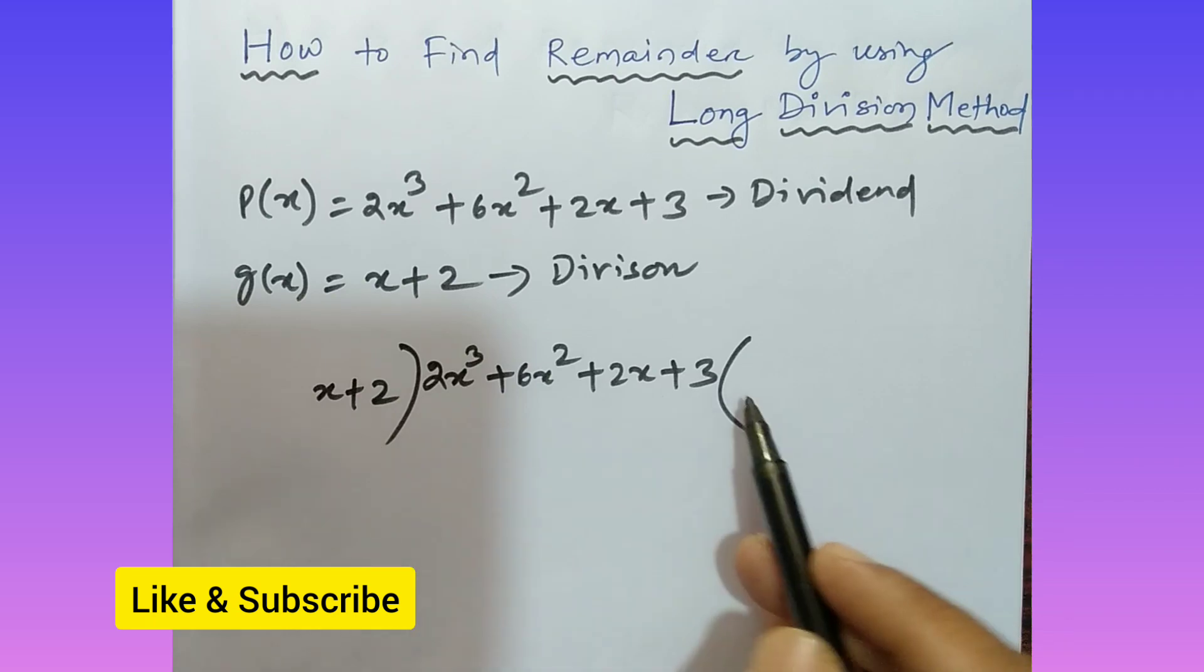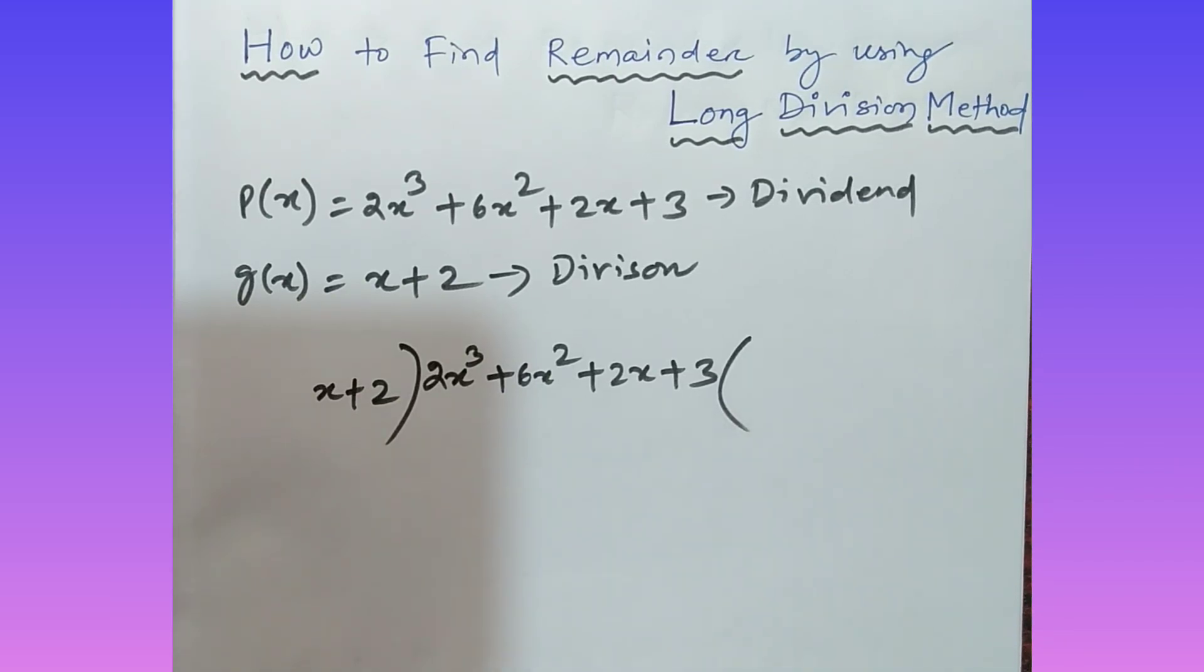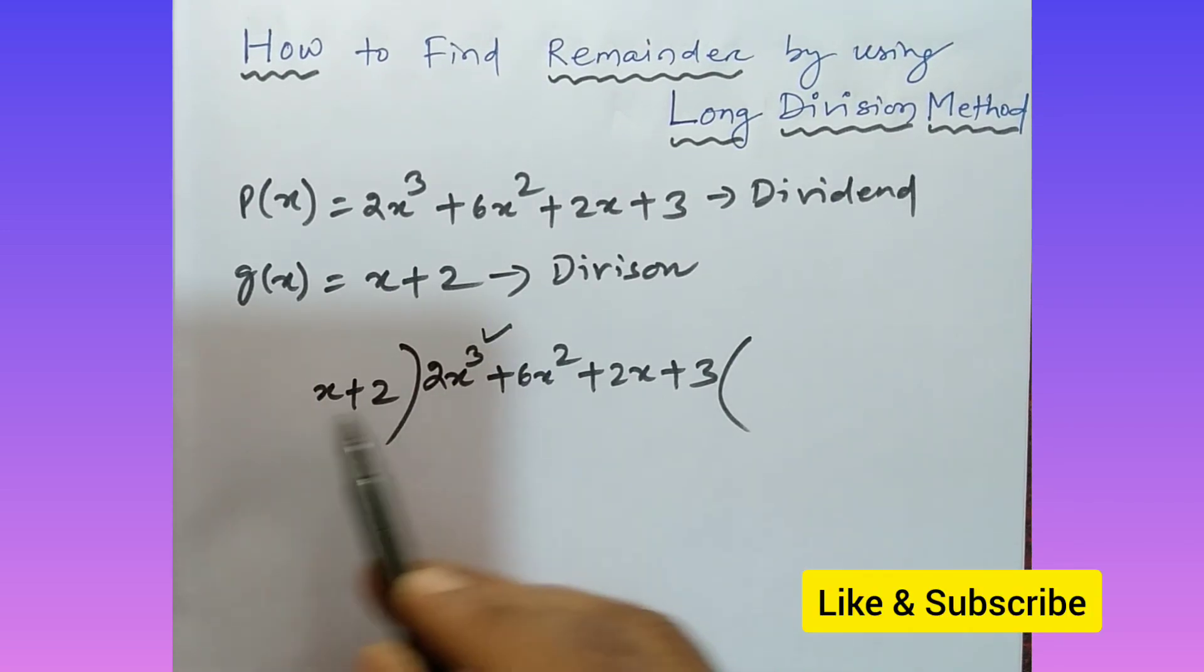Look at here, so this is the dividend, this is the divisor. So here in the quotient part, you have to write the terms. How can you write? Just look at here, what is the trick. Look at the first term, that is 2x³. So 2x³ divided by x, what do you get? 2x².